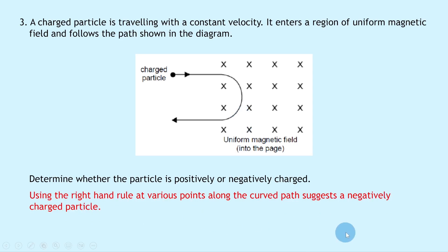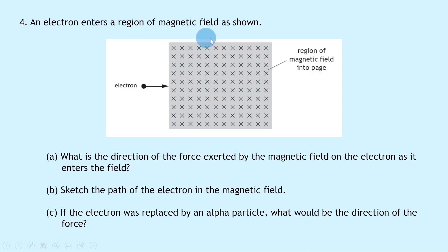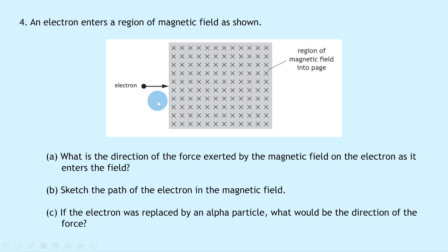Question four: an electron enters a region of magnetic field directed into the page, shown by the crosses, moving in from the left. Part a asks for the direction of the force on the electron as it enters the field. Using the right hand rule, point the index finger into the page and the middle finger to the right — the direction the electron is moving — and the thumb points downwards. So the force on the electron is towards the bottom of the page.